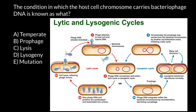Now let's look at our answers. Basically half of the people would choose answer B — prophage. But actually we have to choose answer D. If the question asked for the name of the condition in which the virus is integrated in the chromosome, we would say prophage. But because this question refers to the host cell instead of the virus, we have to choose answer D, which is lysogeny. So our choice is answer D.